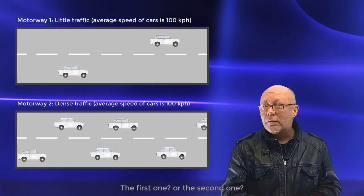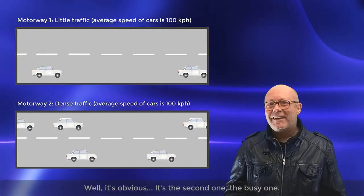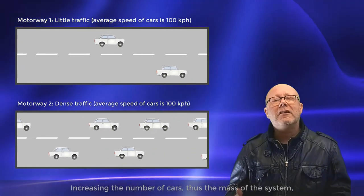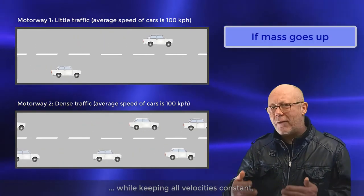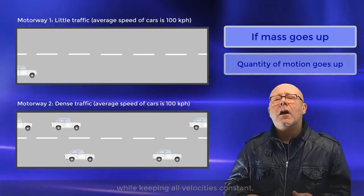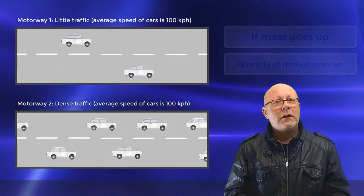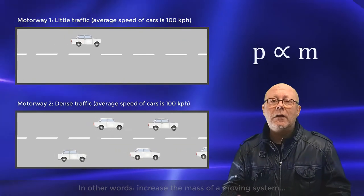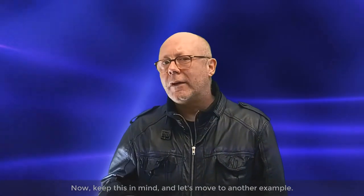The first one or the second one? Well, it's obvious — it's the second one, the busy one. So increasing the number of cars, thus the mass of the system, while keeping all the velocities constant, will increase the amount of motion associated with the system. In other words, increase the mass of a moving system and you increase its momentum.